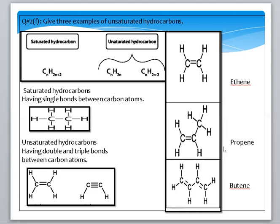The second example is propene. Propene has one double bond, and its formula is C3H6. This follows the general formula CnH2n for alkenes.